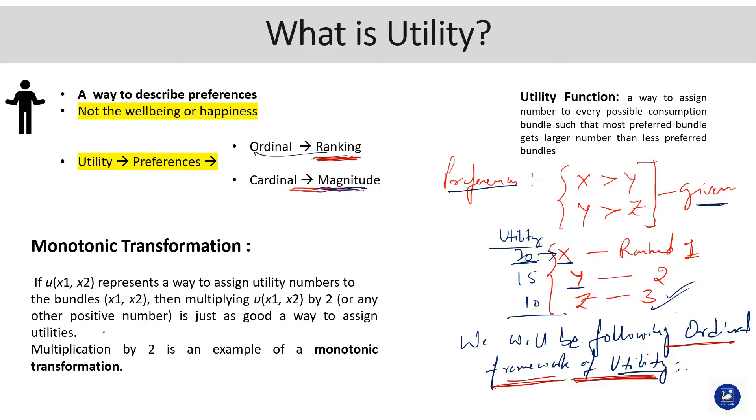I would like to highlight again how we were defining the utility function. Basically, it was a way to assign a number to every possible consumption bundle. For example, we had these three consumption bundles: X, Y, and Z. It's a way to assign a number to every possible consumption bundle in such a way that the most preferred bundle...